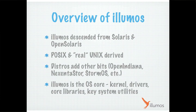A little bit about Illumos. Is everybody familiar with what Illumos is? It's derived from OpenSolaris, it's POSIX. There are distros: OpenIndiana, the Nexenta stores, StormOS. There's another one starting called Lumion. The key thing is Illumos is the core of the OS — the OS core — and that's what we're going to talk mostly about.